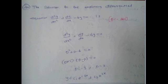From (D+3)(D-2)y = 0: D = -3 and D = 2. The general solution format is y = C₁e^(ax) + C₂e^(bx). Substituting a = -3, b = 2, the solution is y = C₁e^(-3x) + C₂e^(2x).